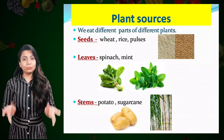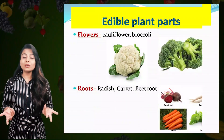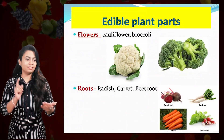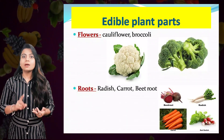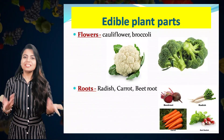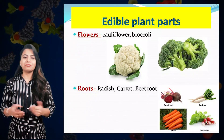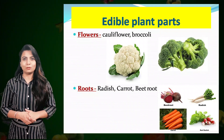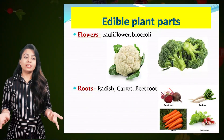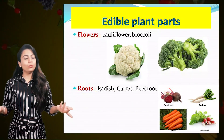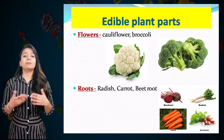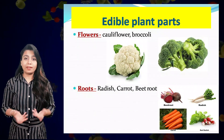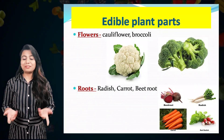Now coming to roots. We also eat roots of plants — that is radish, beetroot, and carrot. These are the roots that we eat in salads as well as vegetables. Next category is fruits. We know lots of fruits are there, for example banana, strawberries, and mangoes — my favorite.